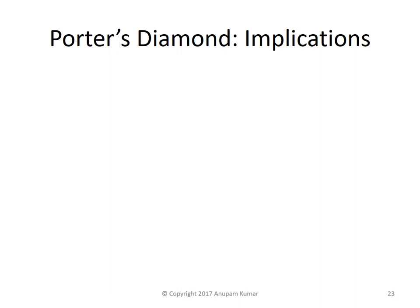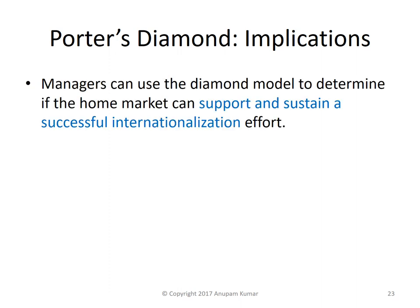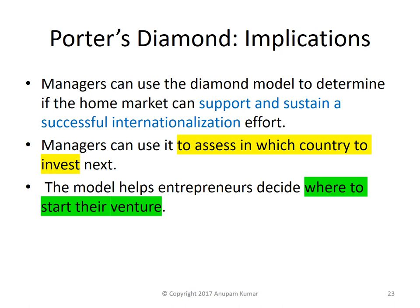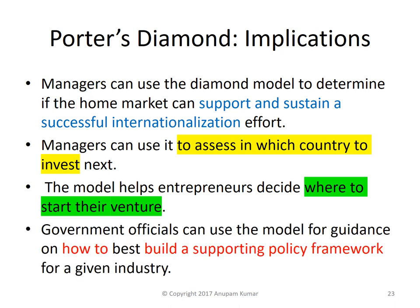Now let us have a look at some of the implications of the diamond model. With the help of this model, managers can determine if a home market can support and sustain a successful bid to internationalise a particular firm. Managers can also use it to assess in which country to invest next. This model helps entrepreneurs to decide where to start their next venture. Government officials can use this model for guidance on how to best develop a supporting policy framework for a given industry.